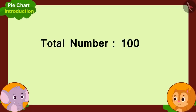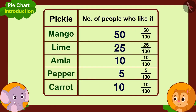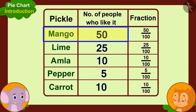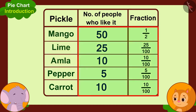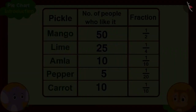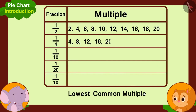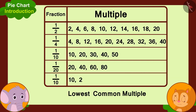We have got information of a hundred people in total. To make a pie chart, we will first write the number of people who like each pickle as a fraction of hundred. Like, 50 people like mango pickle, so we take it as 50 over 100, or half. We will write different pickles liked by people as fractions of hundred. But the total number of parts in all these fractions is different. To solve this, we will find the lowest common multiple of the total parts of all these fractions.